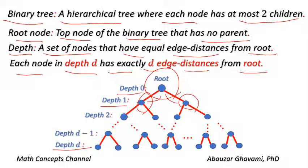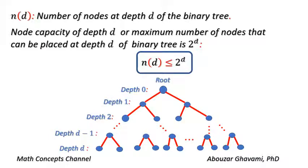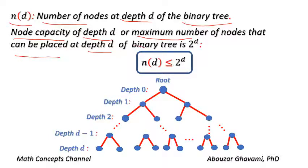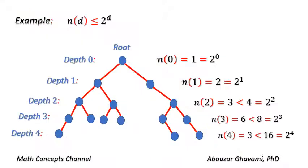Let us denote N of D as the number of nodes at depth D of the binary tree. We show that the node capacity of depth D — the maximum number of nodes that can be placed at depth D of a binary tree — is two to the power of D. In other words, we show that N of D is less than or equal to two to the power of D.